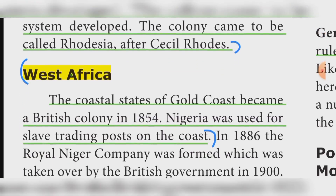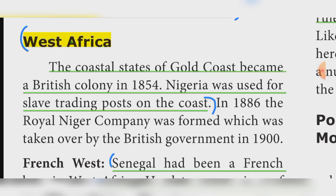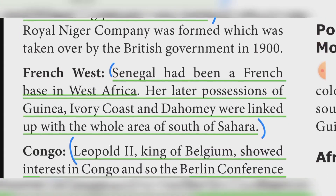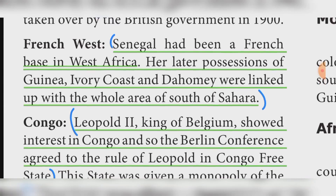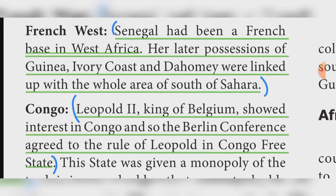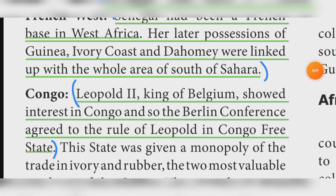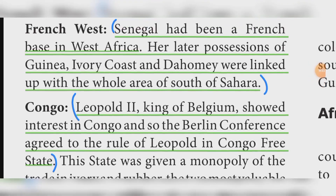West Africa: The coastal states of Gold Coast became a British colony in 1854. Nigeria was used for slave trading posts on the coast. Senegal was a French base in West Africa; later, portions of Guinea, Ivory Coast, and Dahomey were linked up with the whole area south of the Sahara.